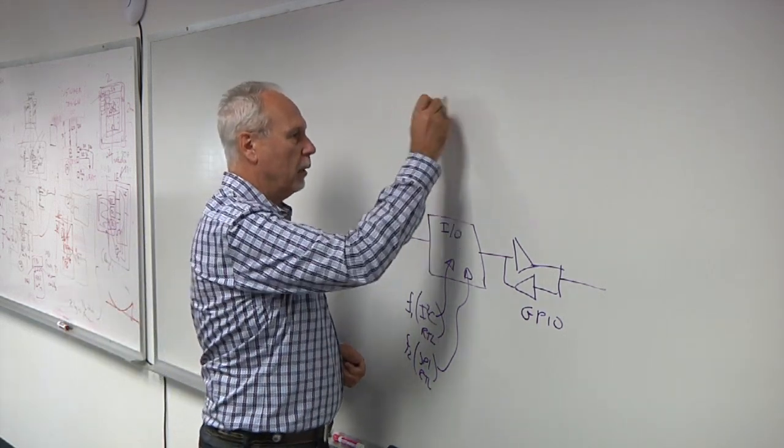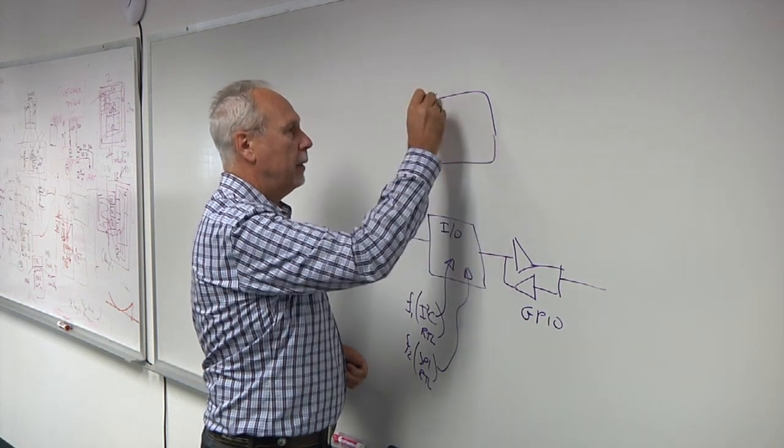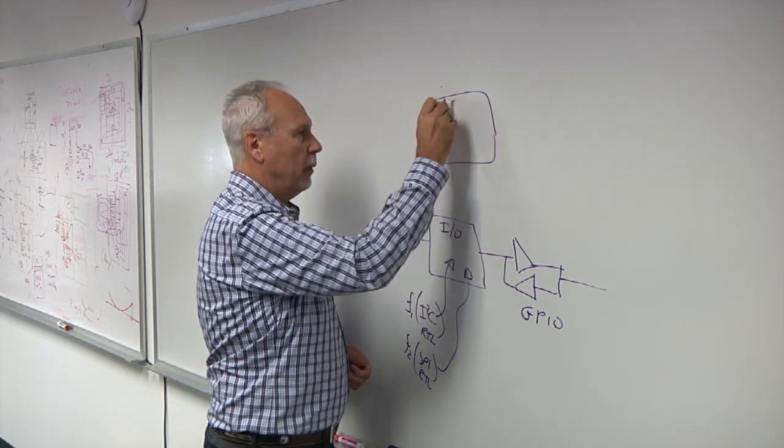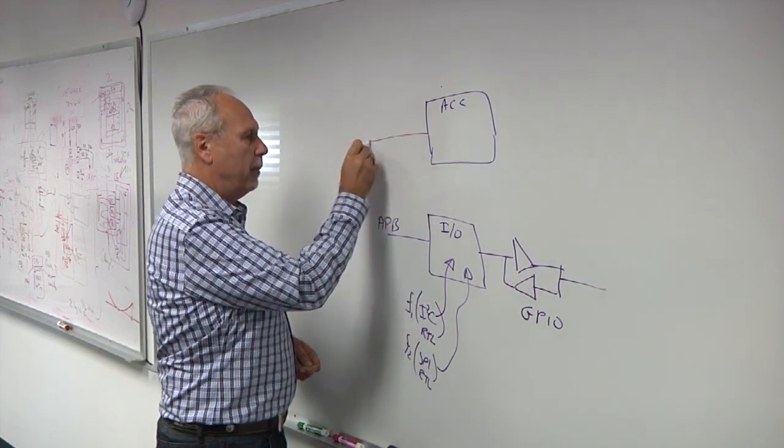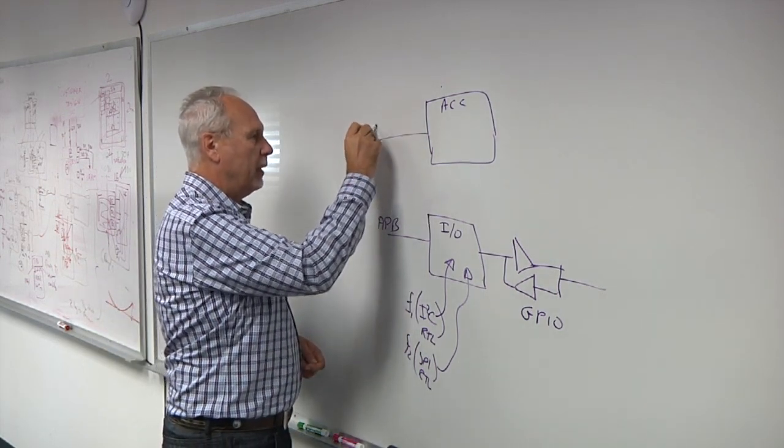So for instance, an accelerator, another block we could call accelerator. Usually this sits off a bus, like an AXI bus.